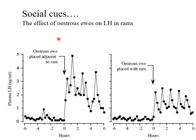The system could be remarkably responsive. Here's data from sheep where estrous ewes were introduced to rams and LH levels in the rams were measured. Before the ram saw the ewes, LH levels were baseline. As soon as the ewe was placed adjacent to the ram in a neighbouring pen, up went his LH levels. Simply placing the ewe with the ram directly also increased LH pulses. Very acute responses of the GnRH pulse generator and LH response system.